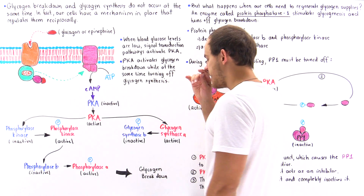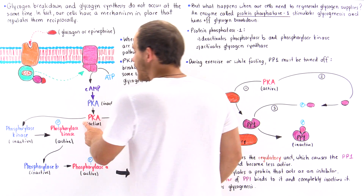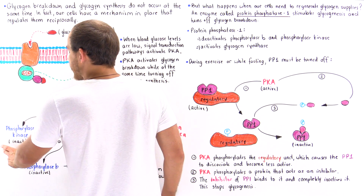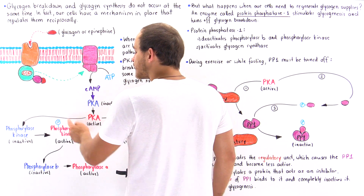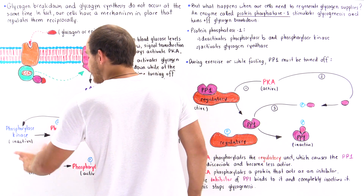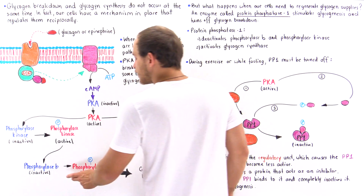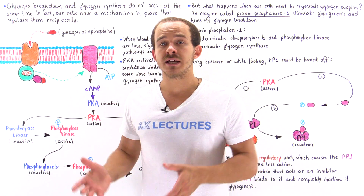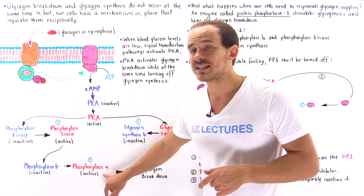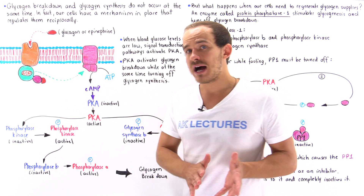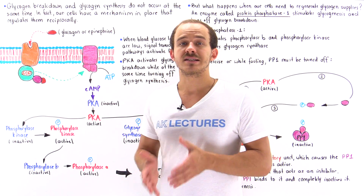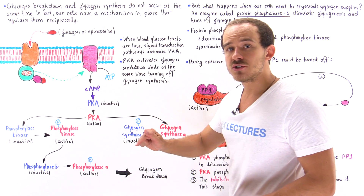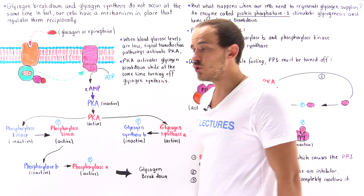Active protein kinase A phosphorylates an enzyme called phosphorylase kinase, transforming it into the active form. Phosphorylase kinase then phosphorylates phosphorylase B, transforming it into the much more active phosphorylase A. Phosphorylase A exists predominantly in the relaxed state and is fully active, and it is phosphorylase A that is responsible for initiating the process of glycogen breakdown.